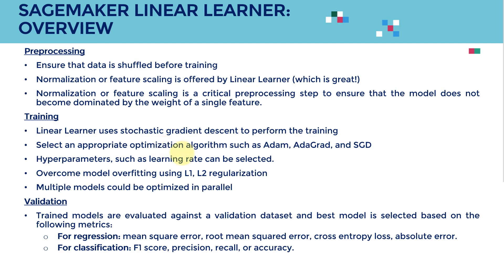Let's take a look at an overview of Linear Learner. First, you have to ensure that the data is shuffled before training — this is critical to make sure the model does not learn the order of the data. We also have to make sure that we perform normalization or feature scaling, which is offered by Linear Learner as well. Normalization and feature scaling are extremely critical preprocessing steps to ensure the model does not become dominated by the weight of a single feature.